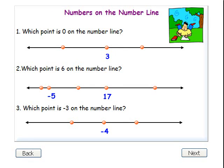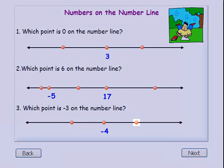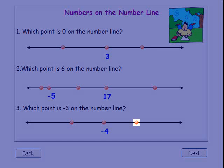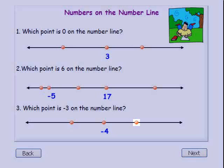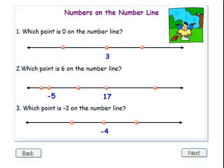Number three: which point is negative three on the number line? Negative three is greater than negative four, so it's to the right of negative four on the number line.